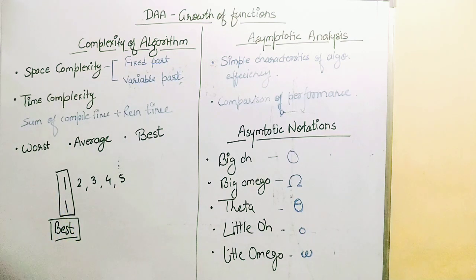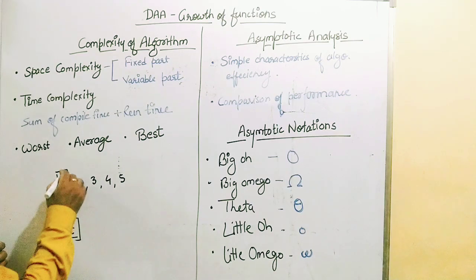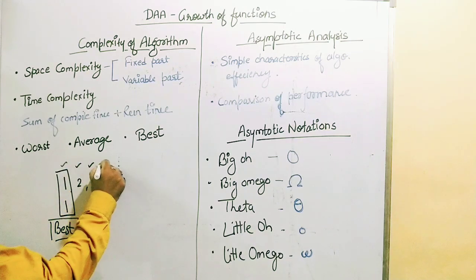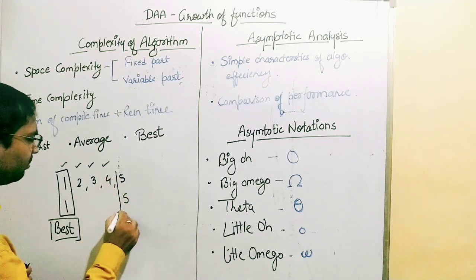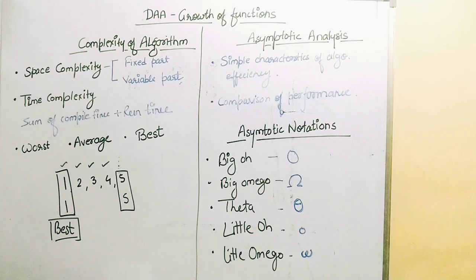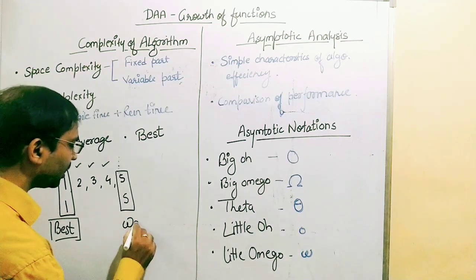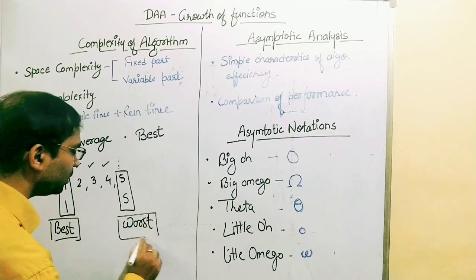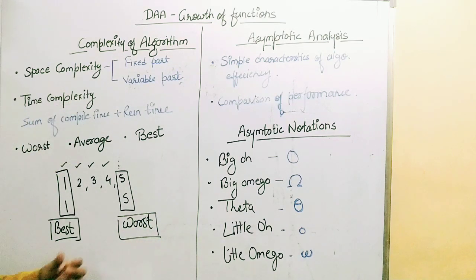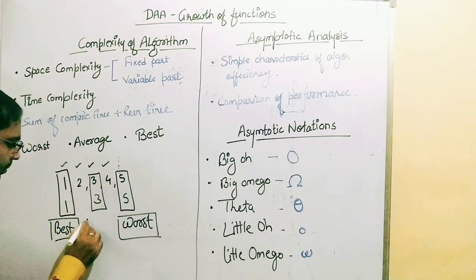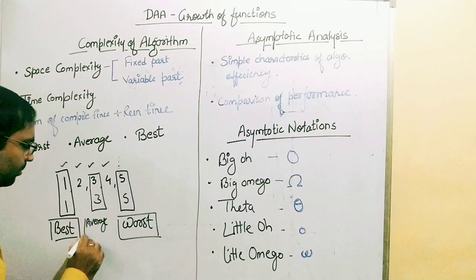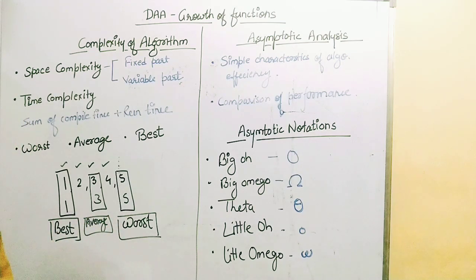On the other hand, if someone asks where is 5, the algorithm will compare with the first element, then the second, then the third, then the fourth, and finally find 5 at the last position — taking maximum time. This is called the worst case. If someone asks to find element 3, which is in the middle, this gives us the average time — at an average, it takes this time to execute.